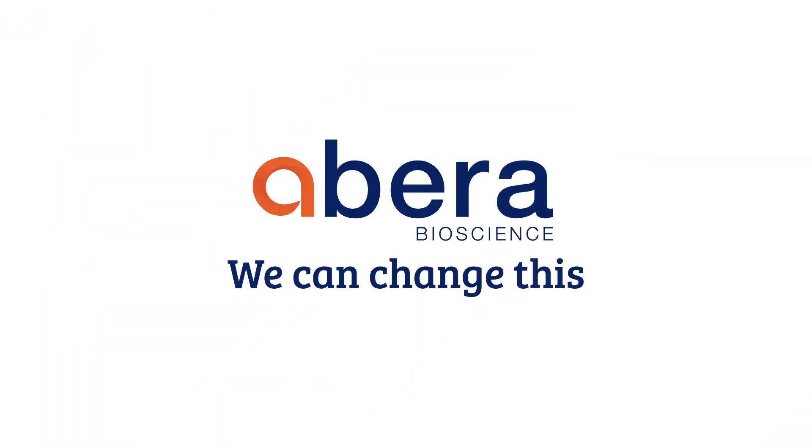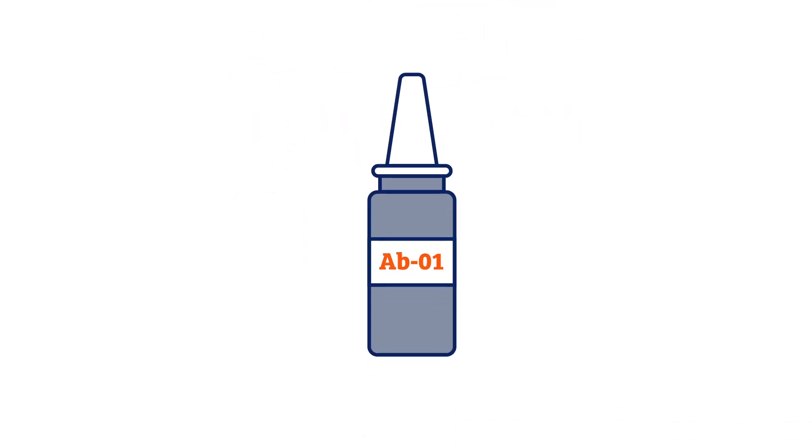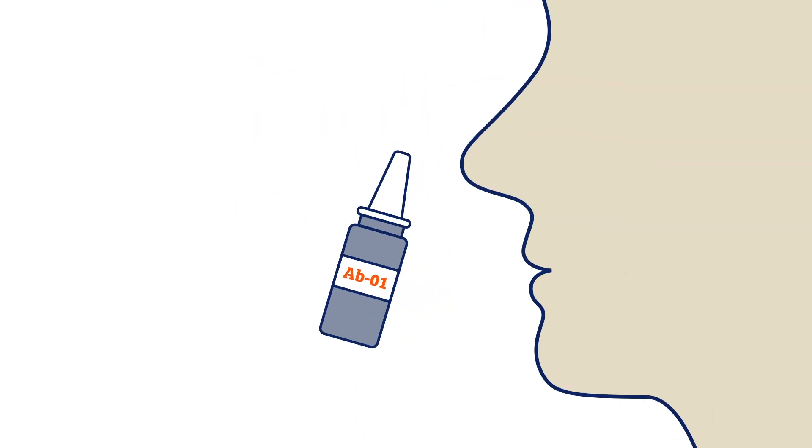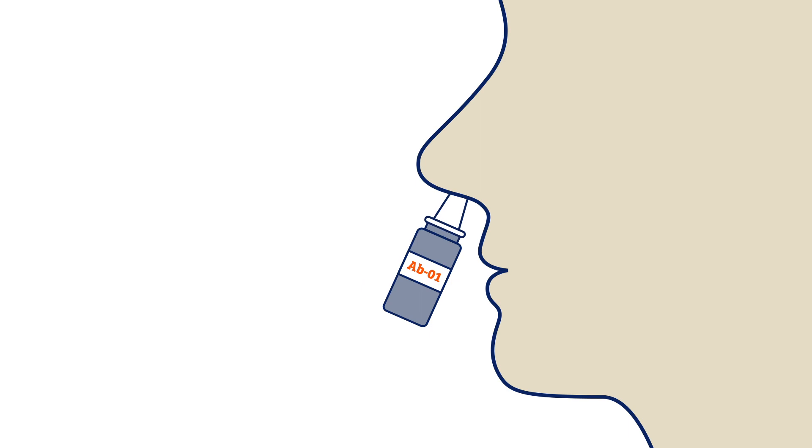There are vaccines available but unfortunately they do not protect against all pneumococcus varieties. ABERA can change this. Our greatest hope of doing so is our vaccine candidate AB01 which is easily administered through the nose. At present there are 97 known varieties of pneumococcus and AB01 is developed to provide protection against all of them.